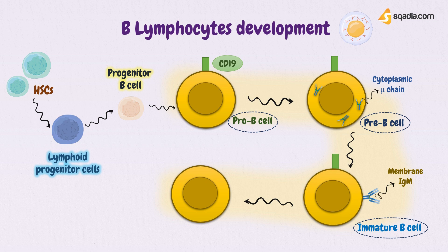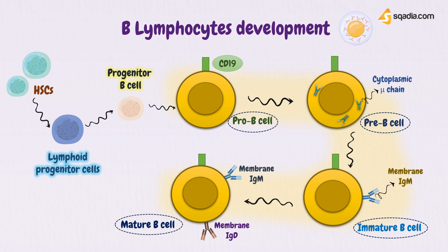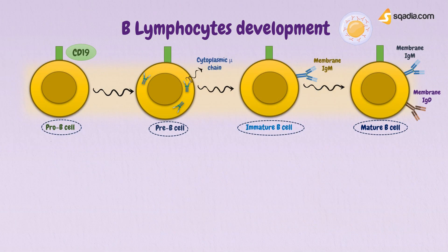Finally, the cell becomes a mature B cell, expressing both IgM and IgD on its surface. This mature B cell then leaves the bone marrow and enters the bloodstream. It is during this development process that unique molecular mechanisms operate on the Ig genes to generate large numbers of different variations of the immunoglobulin, which recognize different antigens.